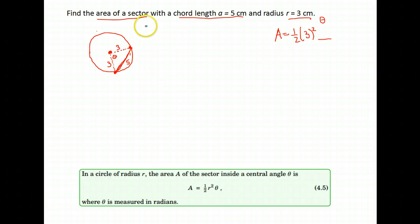Now if you read your text, they have solved the law of cosines formula for theta, so that it makes it a little easier for you. Or you can start with your law of cosines, which says a squared equals b squared plus c squared minus 2bc cosine theta.